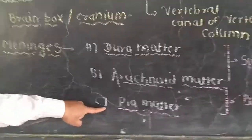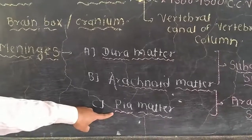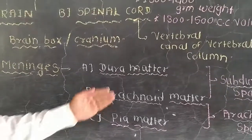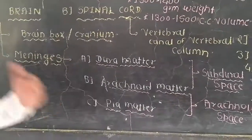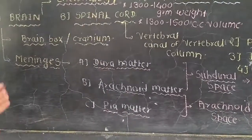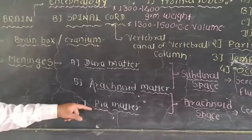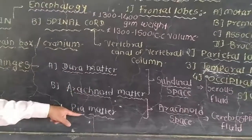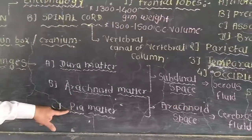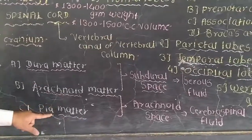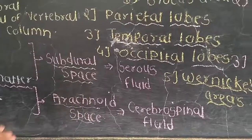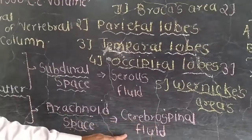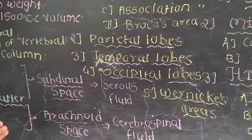The third membrane is the pia mater. It is a thin membrane located below the arachnoid mater and is closest to the different parts of the brain. In between the arachnoid mater and the pia mater, there is a space known as the arachnoid space. This arachnoid space contains a fluid known as cerebrospinal fluid, which is one of the most important fluids.